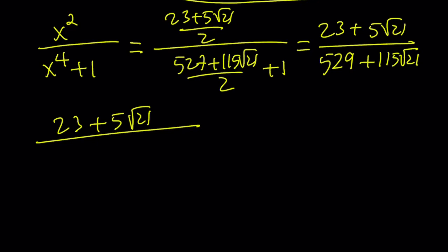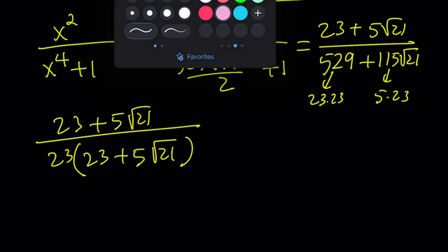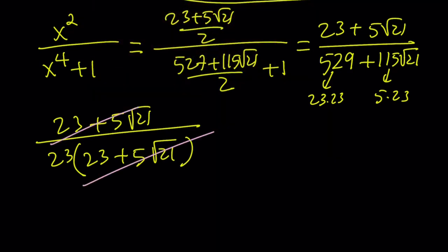I can kind of take out and this is 5 times 23 and this is 23 times 23. So we can take out a 23 and inside the parentheses we get 23 plus 5 times the square root of 21. How nice, right? And we can simplify this.